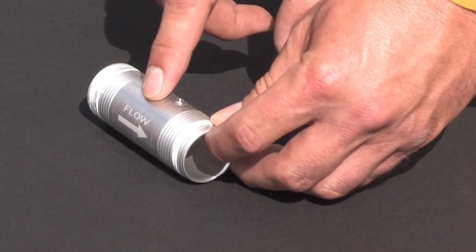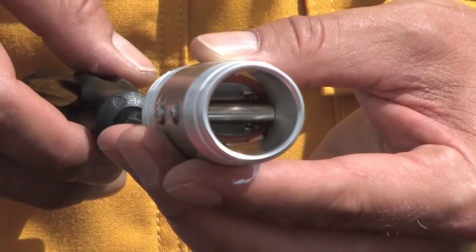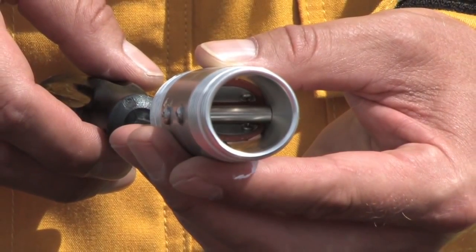The butterfly check valve helps reduce water backing up into the hose. Notice how the butterfly valves seat on the inner walls of the check valve body.